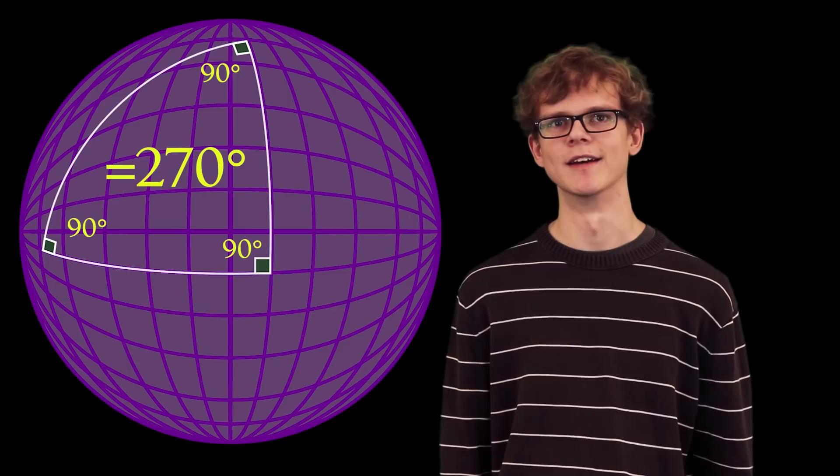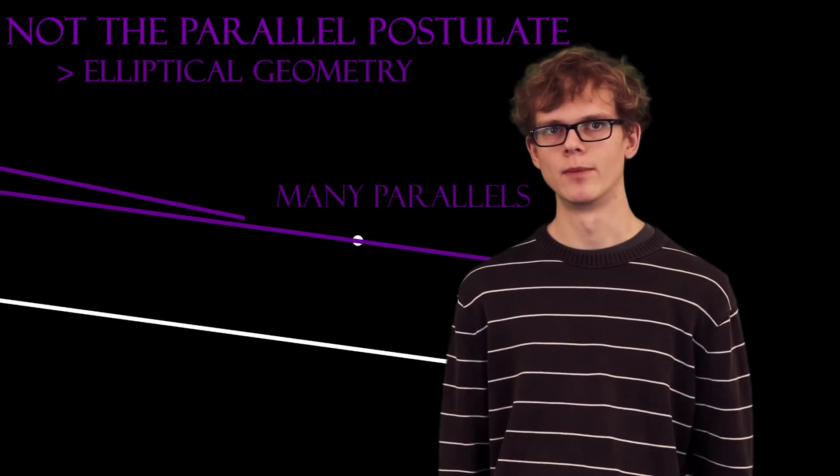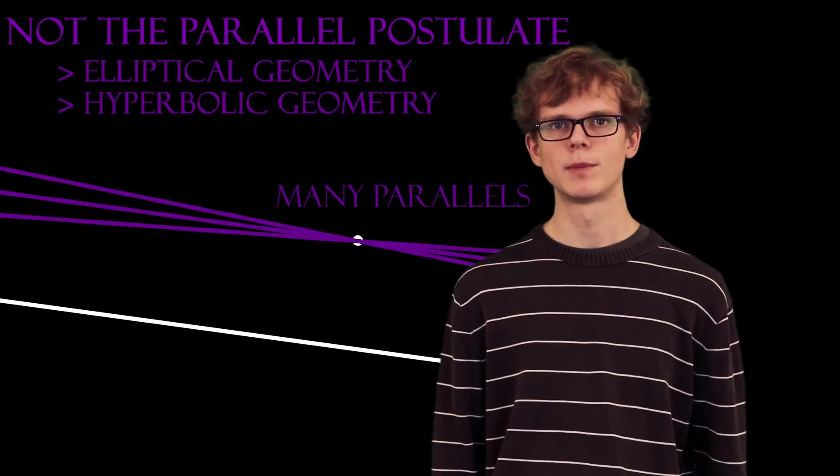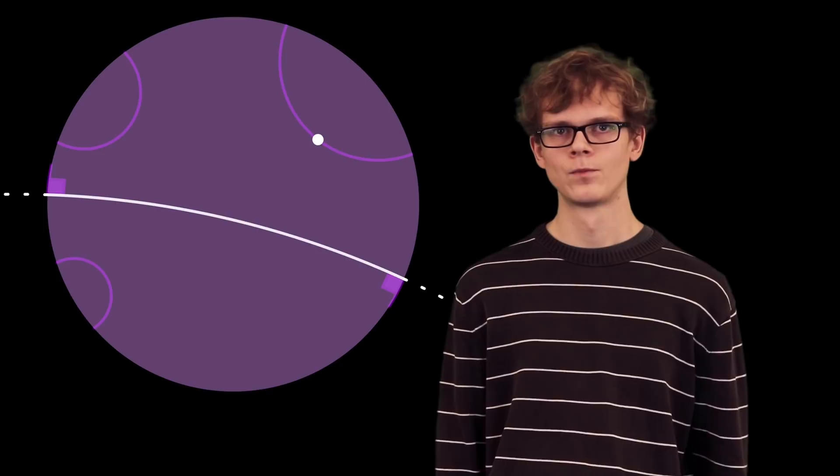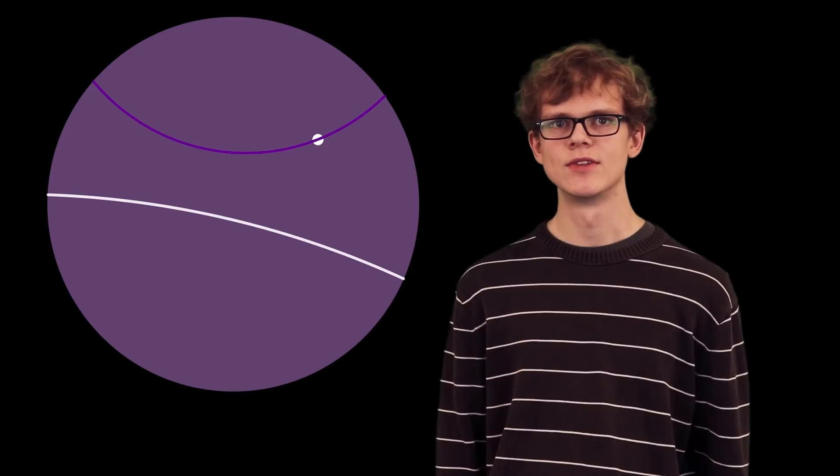Second, you can say there are many parallel lines through any one point. This is called hyperbolic geometry, and it's a little harder to picture than elliptical geometry, but by no means brain-breakingly so. To picture it in our normal Euclidean world, you have to imagine doing geometry on a disc, and represent what we call lines with circular arcs which meet the edge of the disc at right angles. If you take any one of these lines and a point outside of it, you can draw as many lines not touching it as you want through that point — so it has lots of parallels.